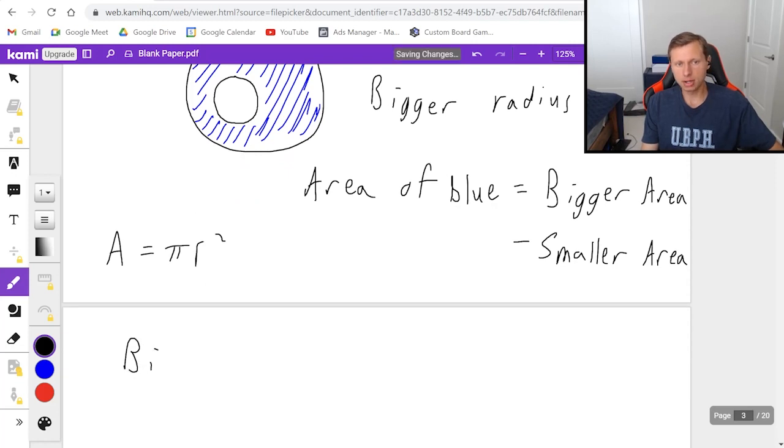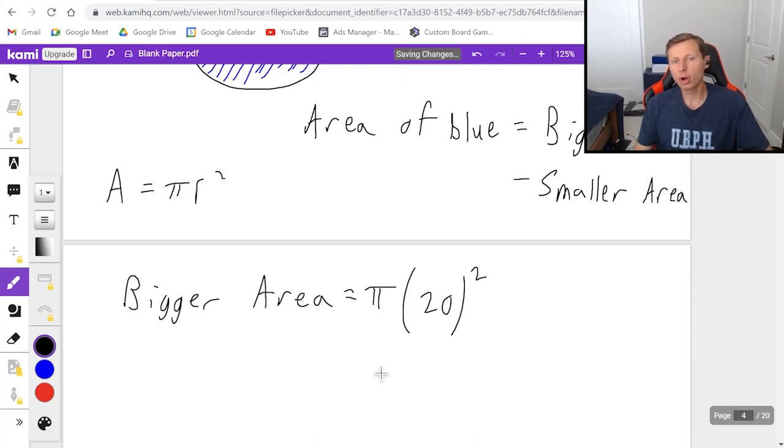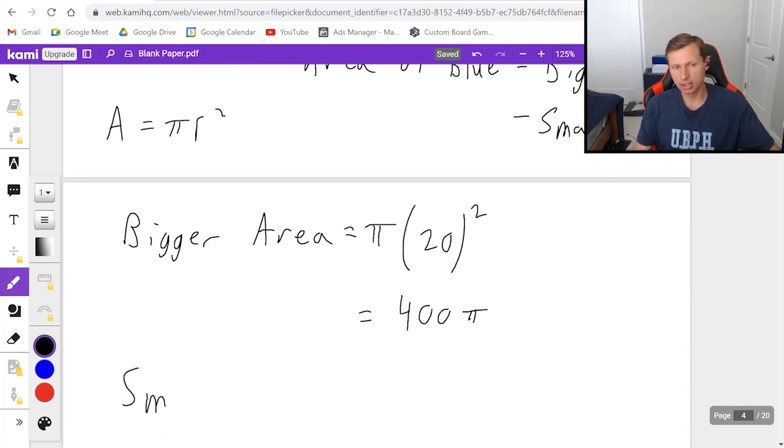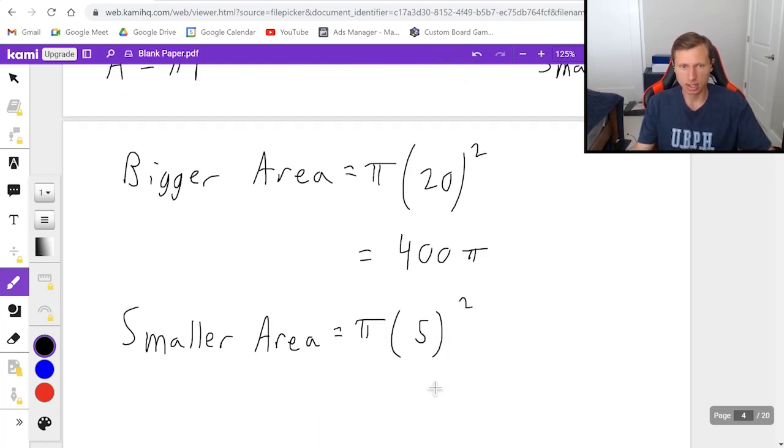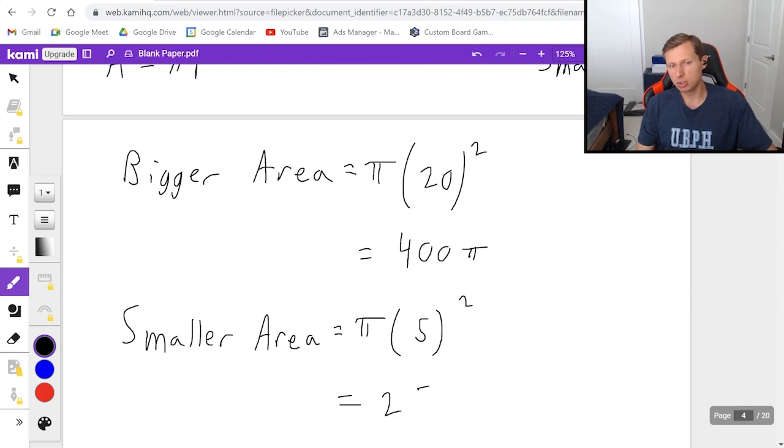So for the bigger area, bigger area is going to follow pi times r was 20 for the bigger area. So square that. 20 squared is 400. So the bigger area is going to be 400 pi. And then we just need to subtract the smaller area. Smaller area is going to be, again, pi r squared, where this time the radius is only 5 squared. So the smaller area is only going to be 25 pi.